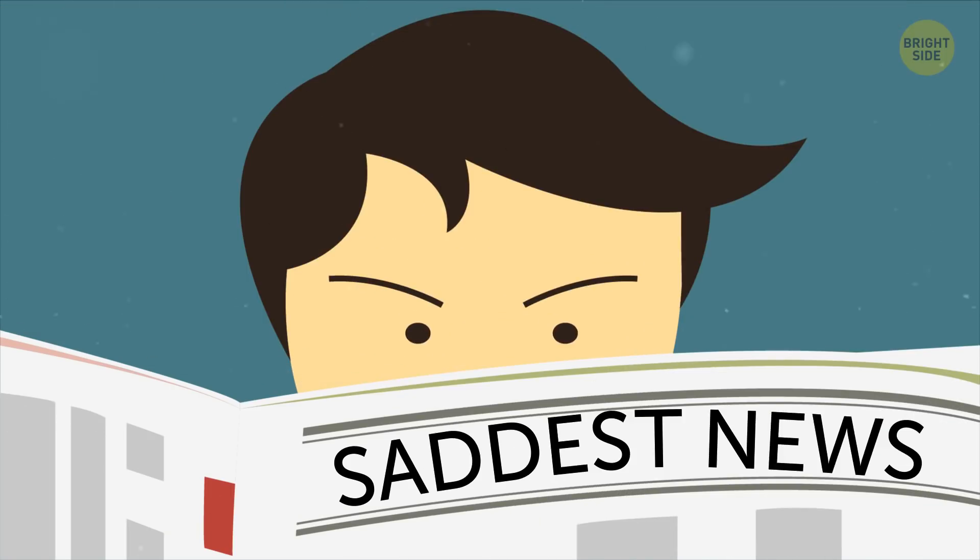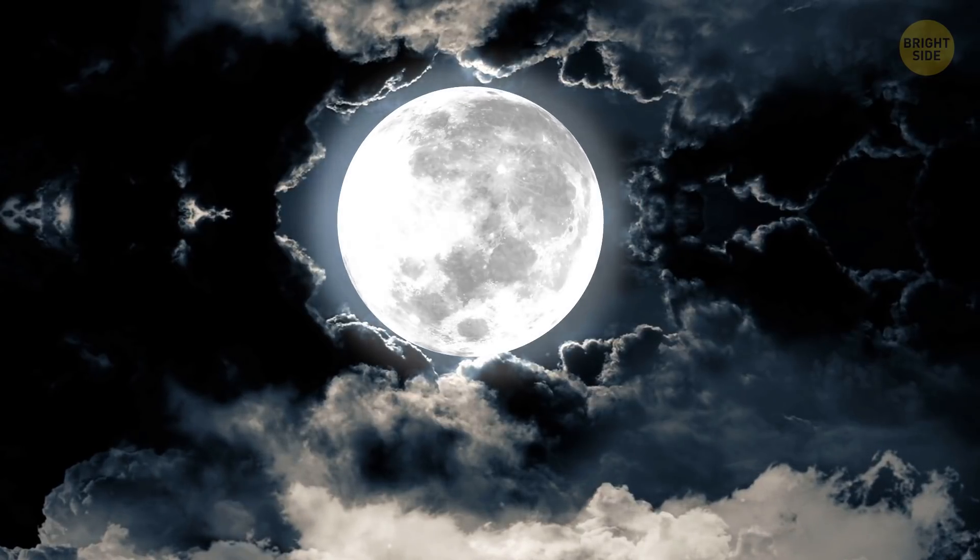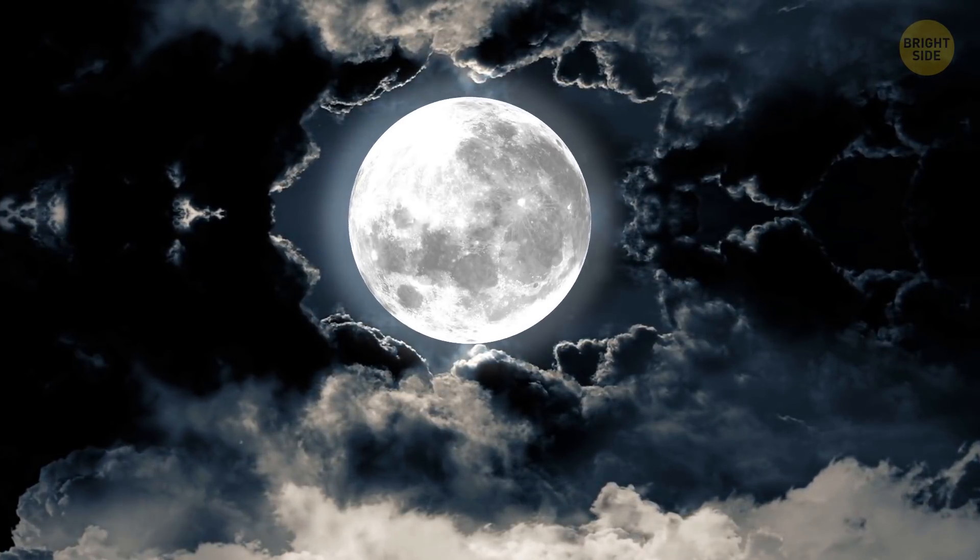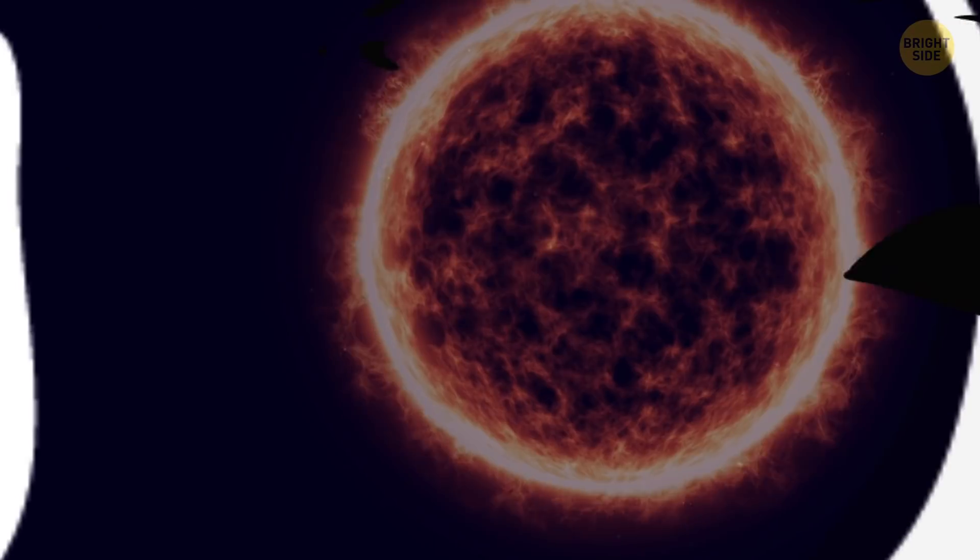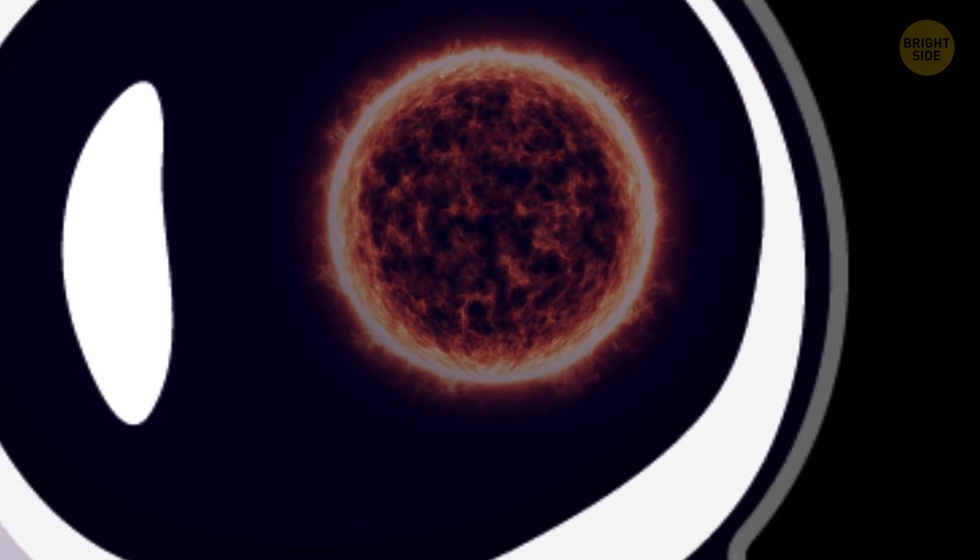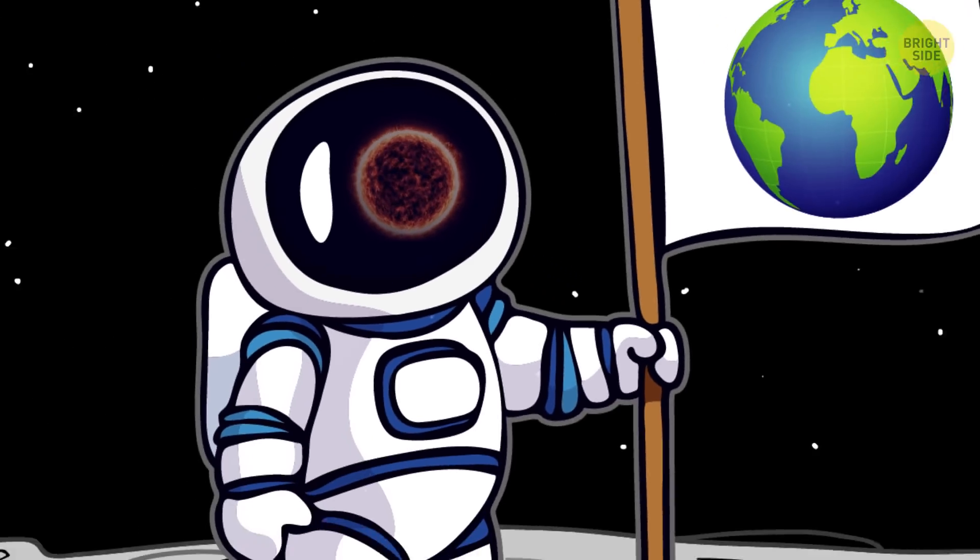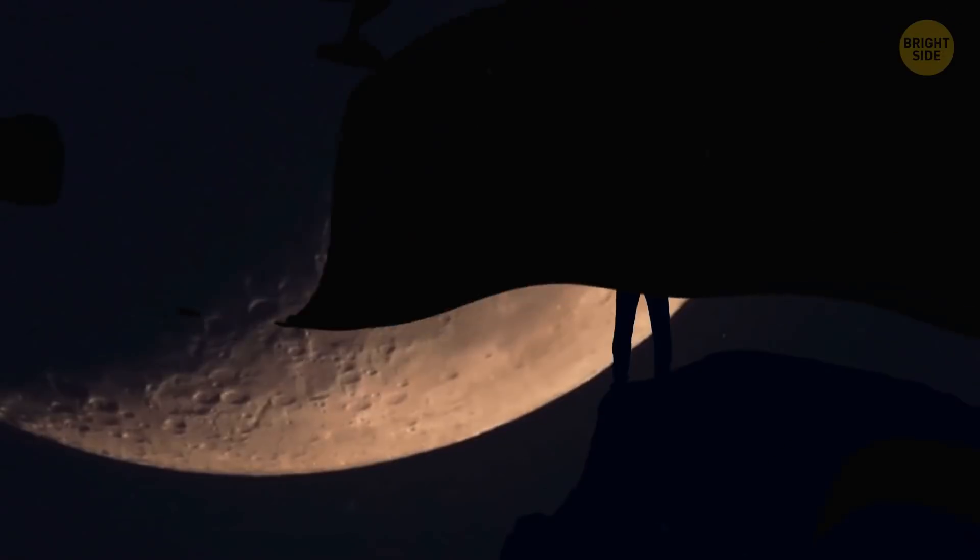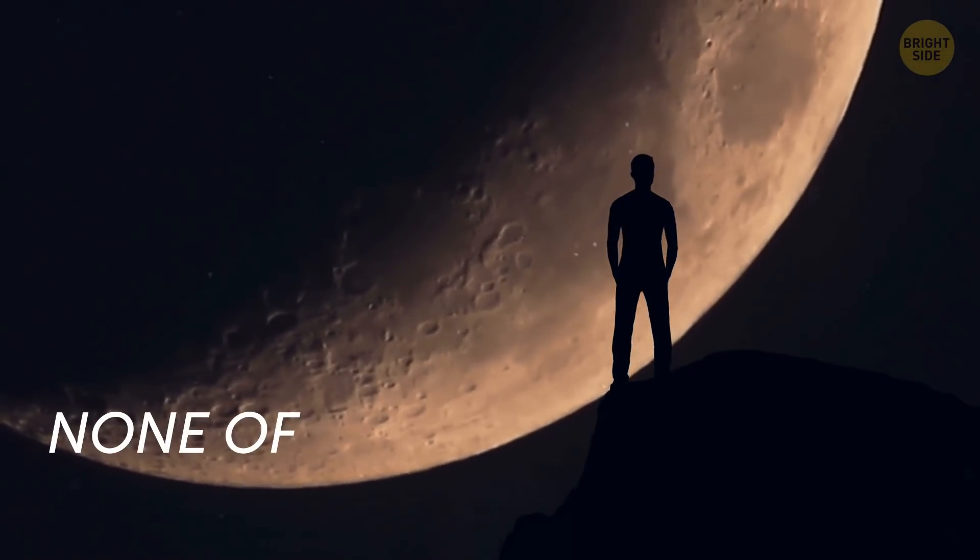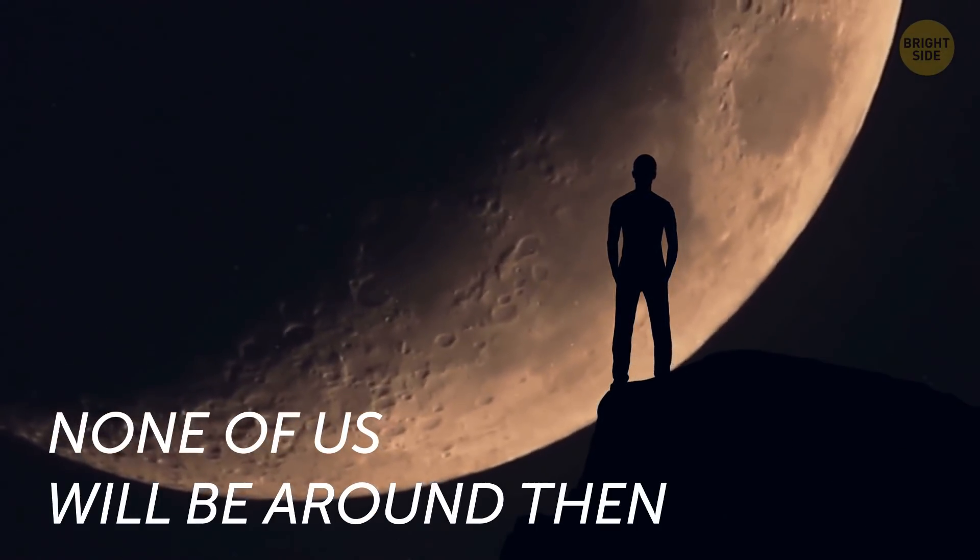And do you want to know the saddest news? You've probably heard that our planet's own Moon is slowly but steadily moving away from Earth with every passing year. It makes scientists believe that in some 5 billion years, our Moon may also end up as a Plunet. Just how heartbreaking is that? Not much really, since none of us will be around then, so who cares?